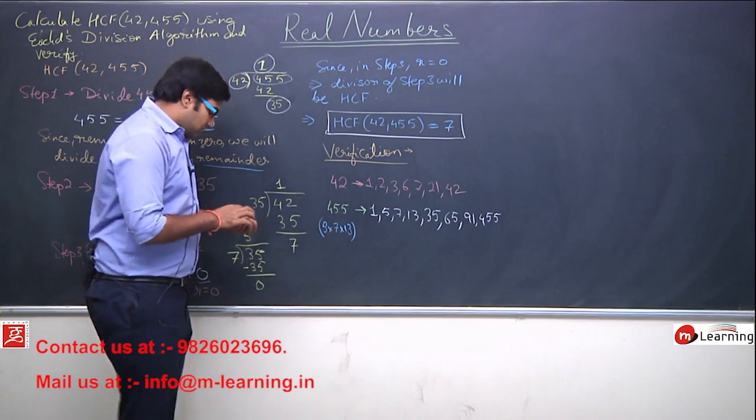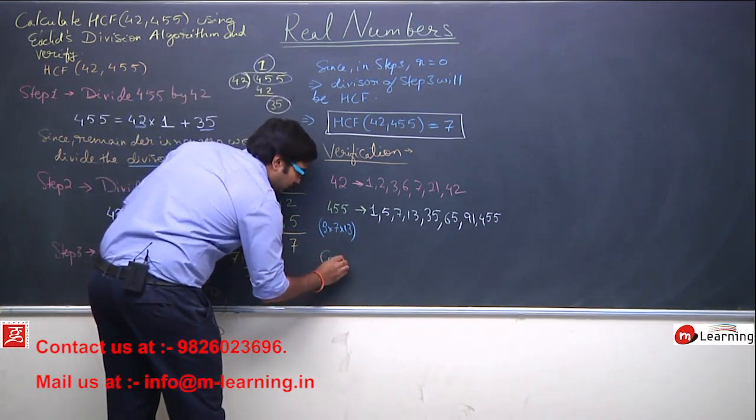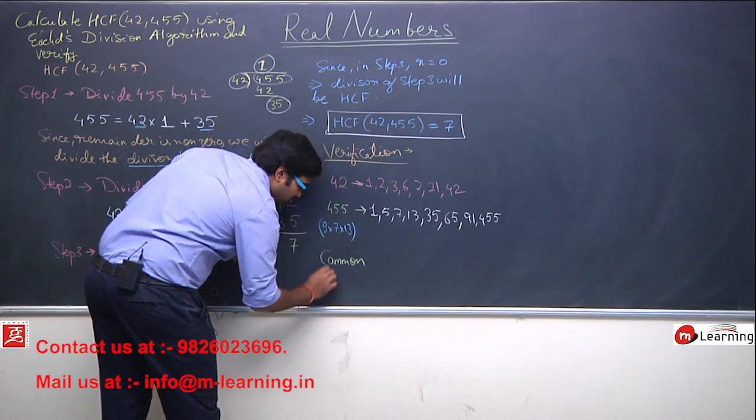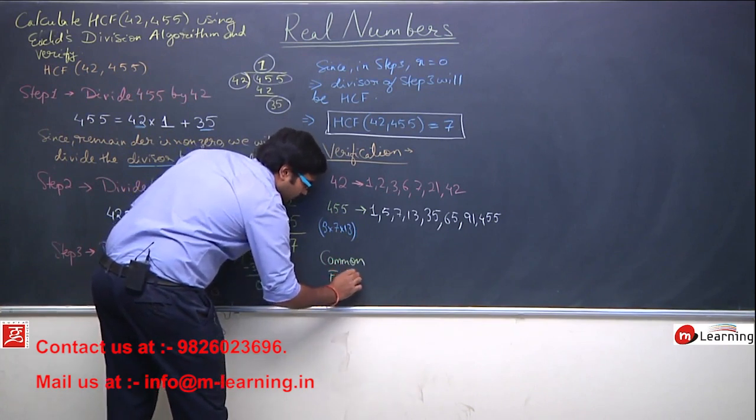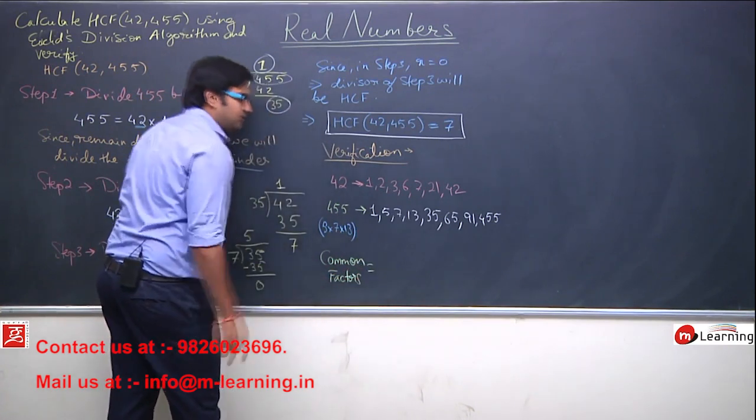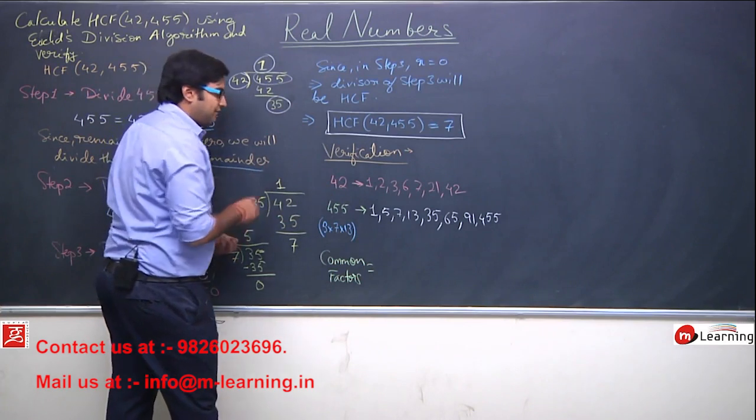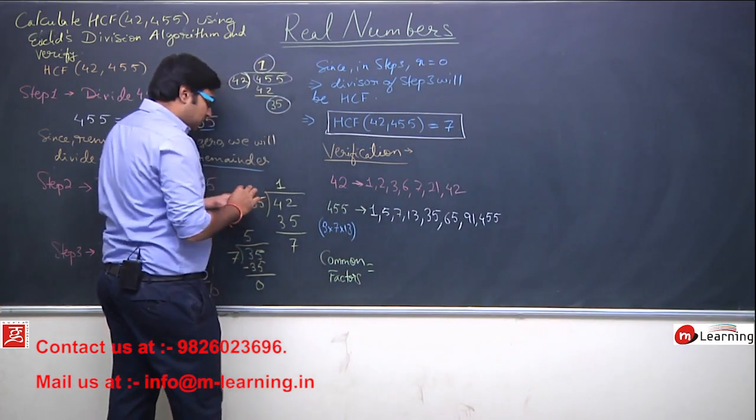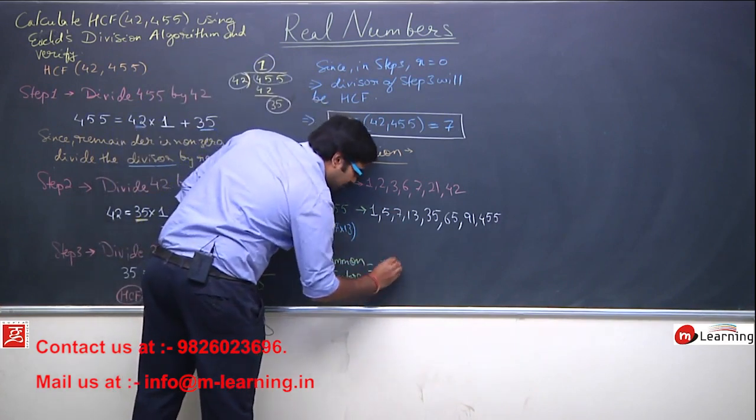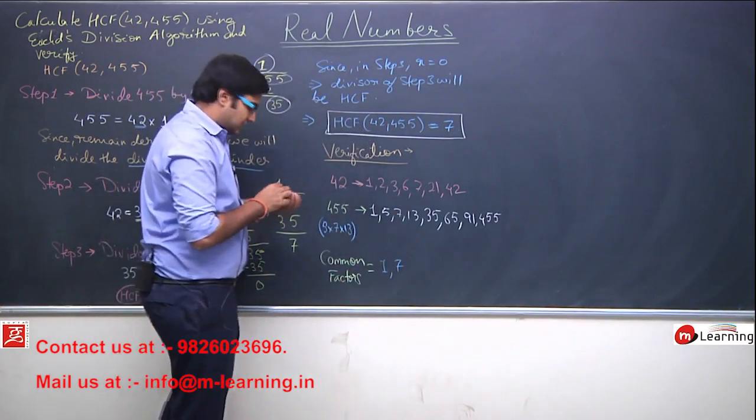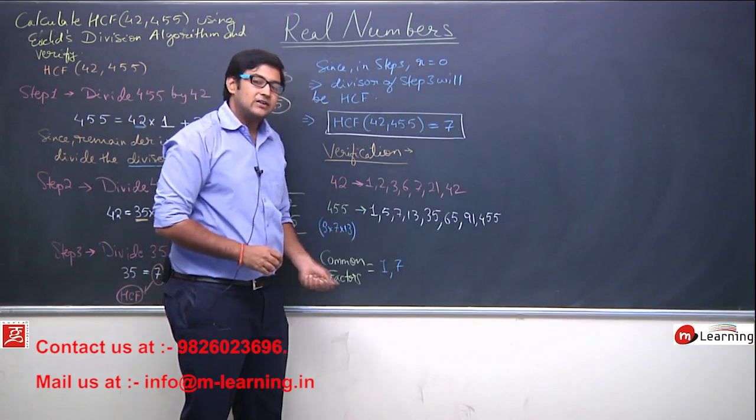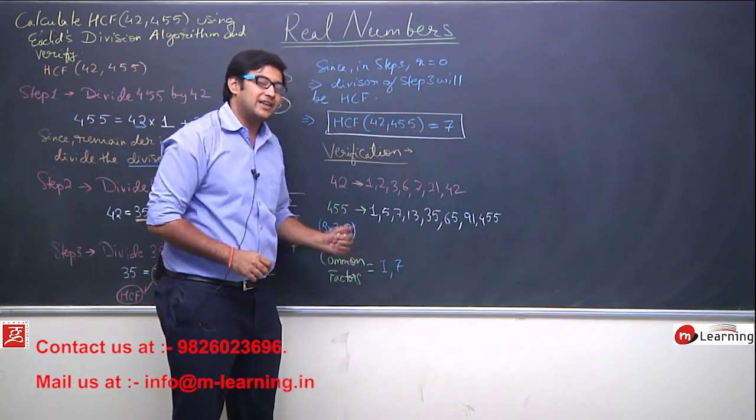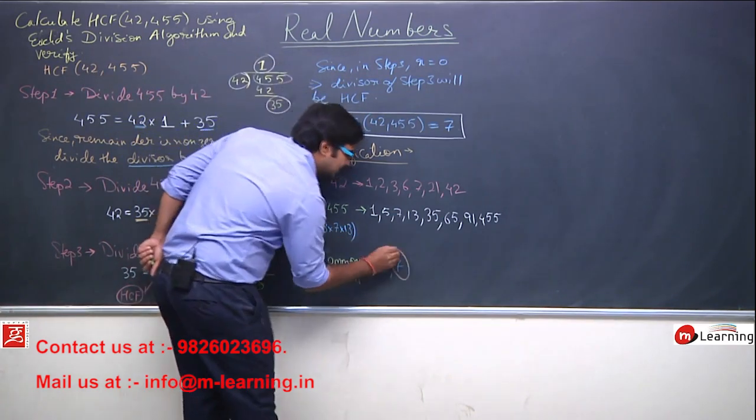Now which are the common factors? If I ask you the common factors, what are the common factors of 42 and 455? I can see 1 is common, is there any other number common? Yes, 7 is also common. So 1 and 7 are the common factors and which is the highest factor, which is the factor which is common as well as the highest is 7.